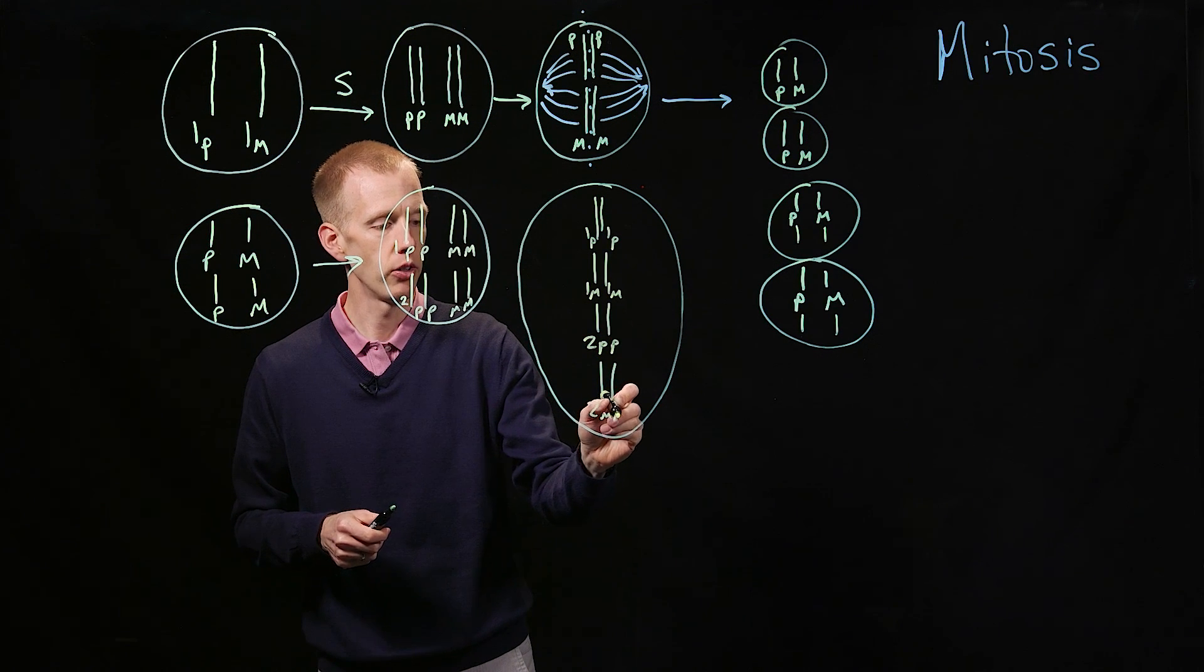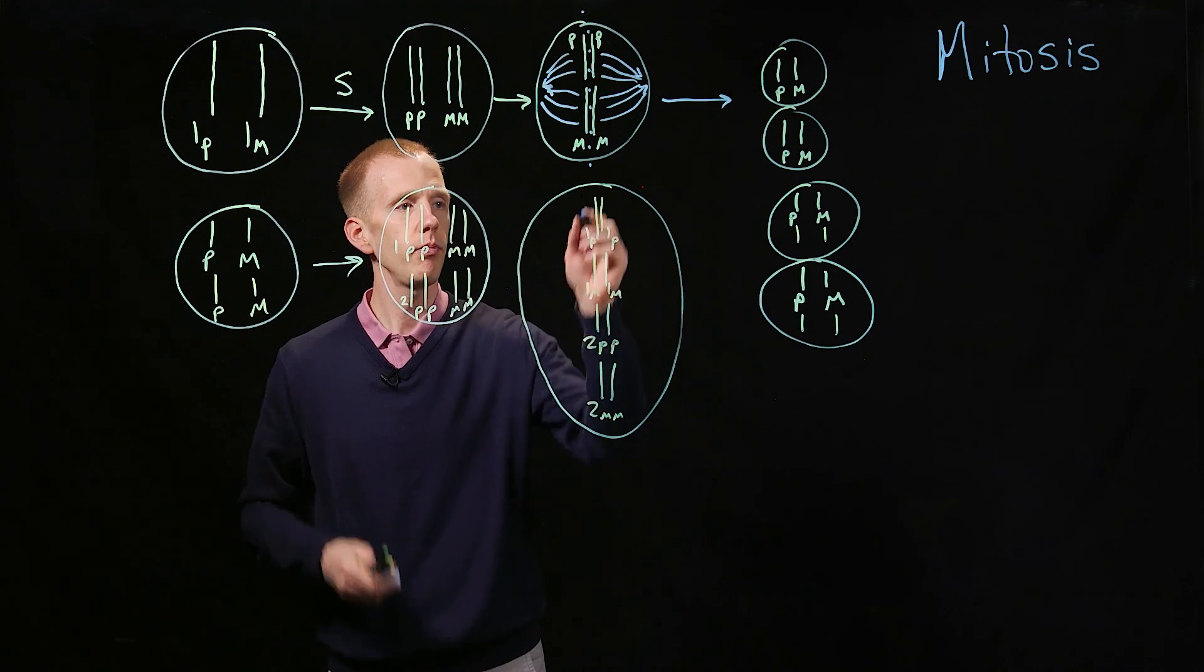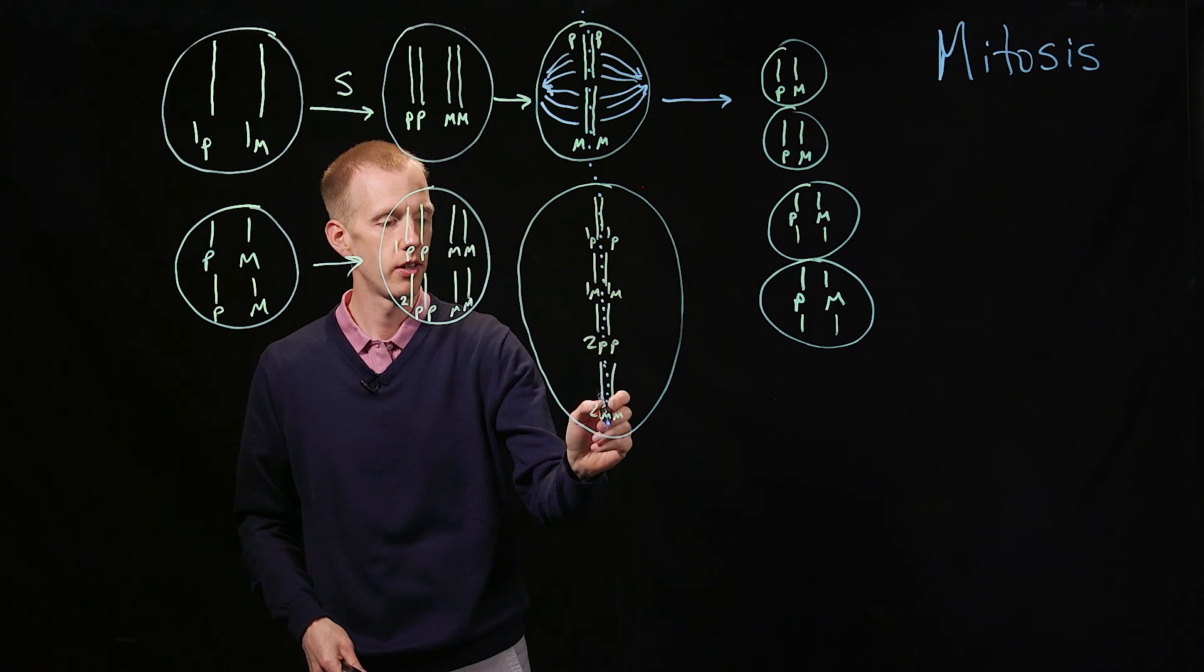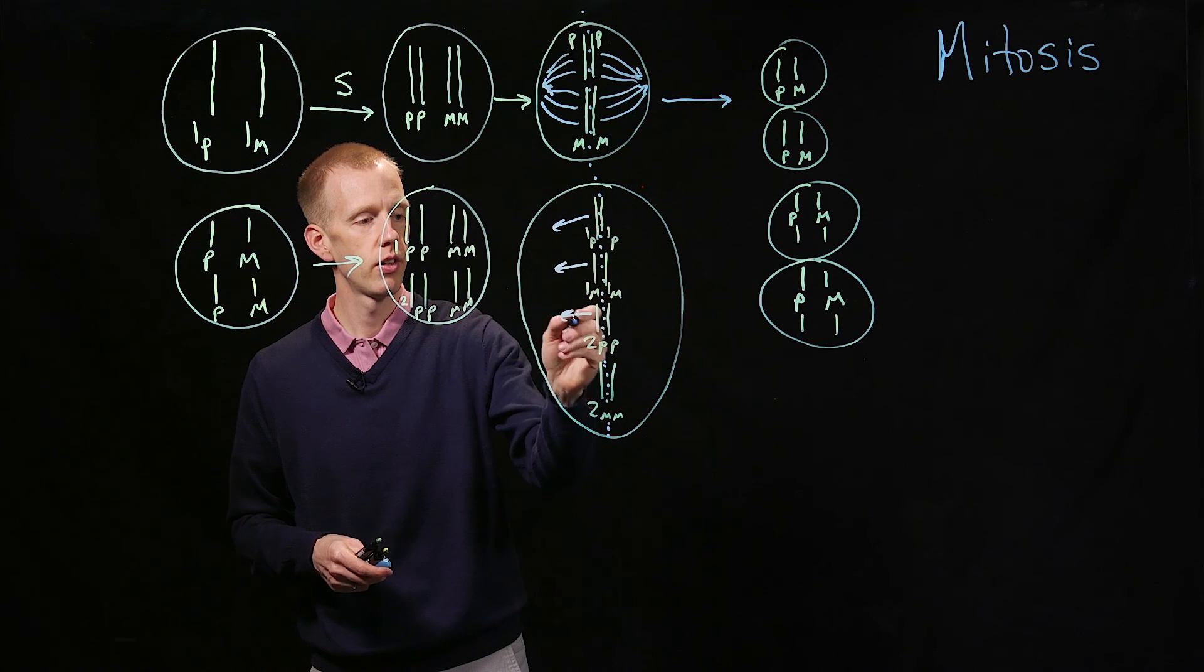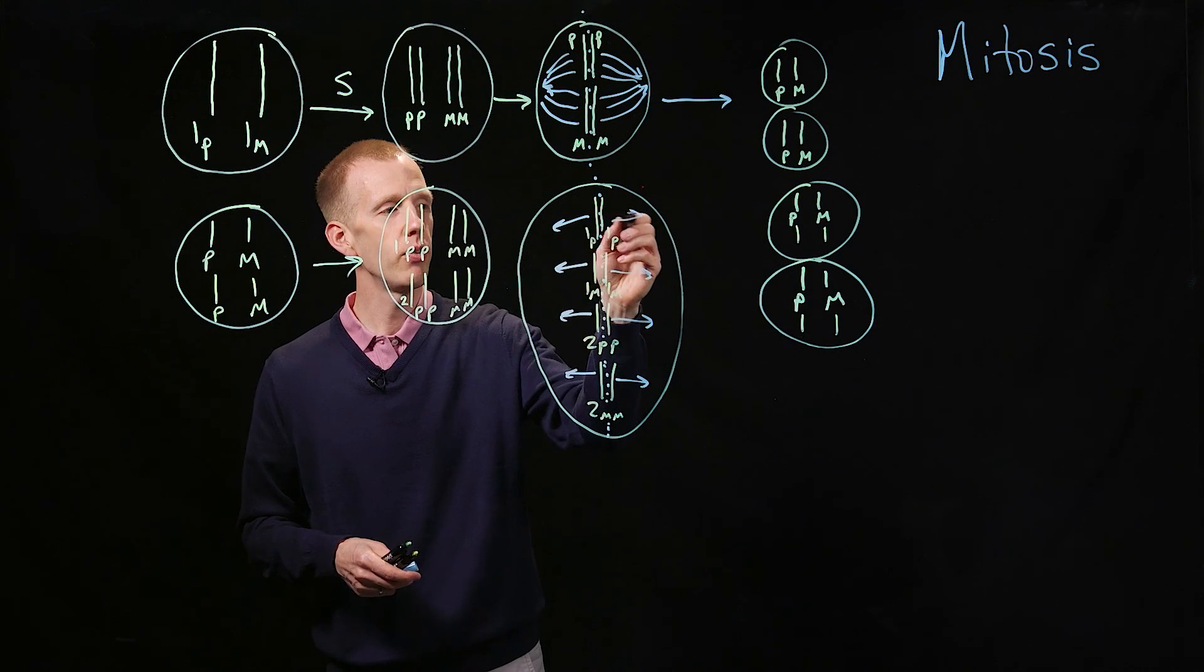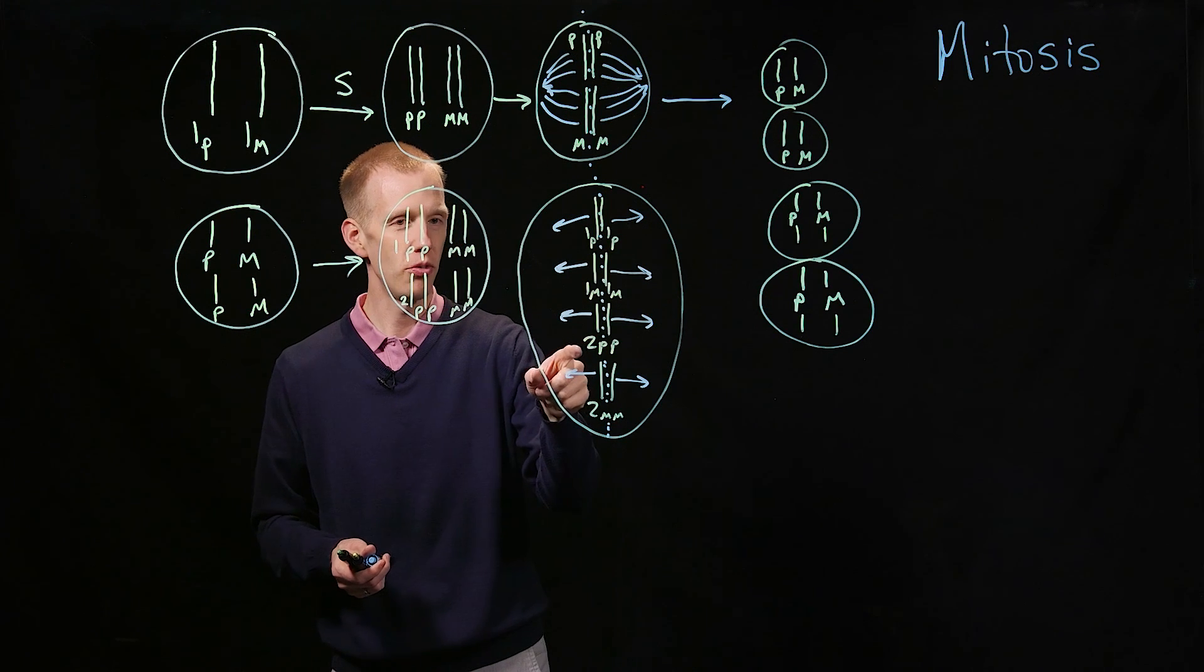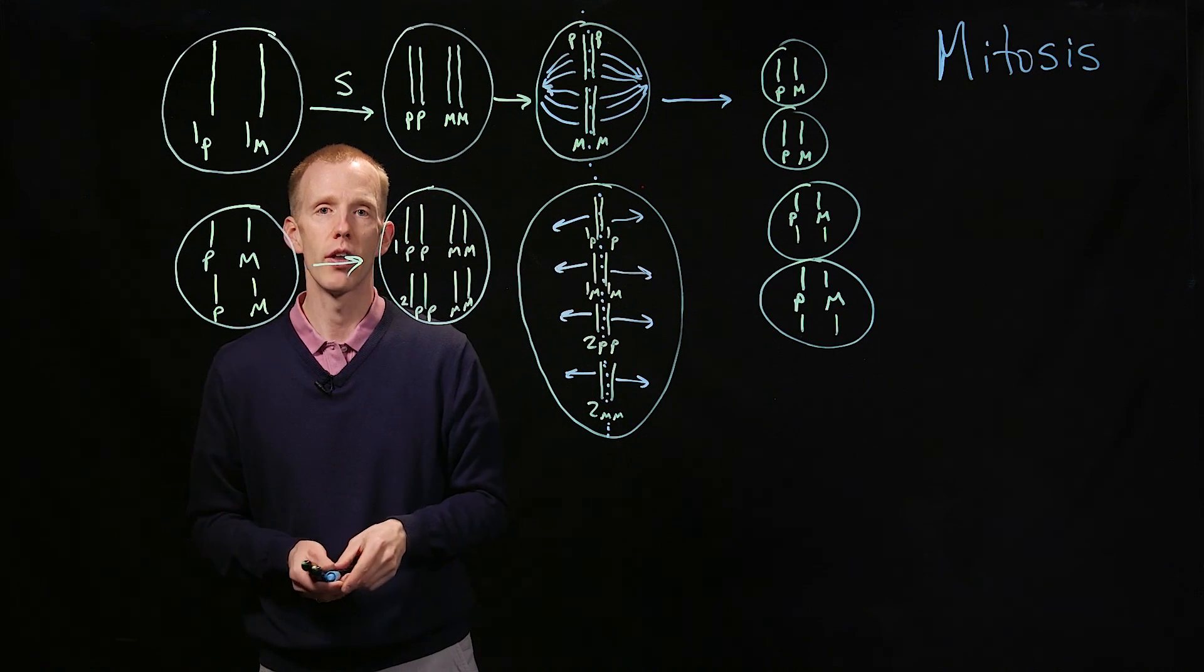And so now when cell division occurs, those two sister chromatids, each of the pairs of sister chromatids, separate and go in different directions. And that's the way that the cell ensures that every resulting daughter cell has the same genetic complement, a copy of chromosome two from mom and two from dad, and one from mom and one from dad, as the initial cell that we started with.